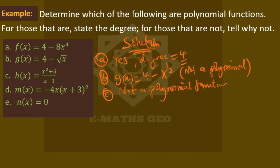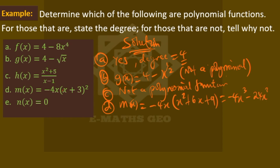Part D is a polynomial because we can expand it. Expanding: minus four x times x squared plus nine gives minus four x cubed minus 24x squared minus 36x. So the highest power is three, meaning the degree is equal to three.